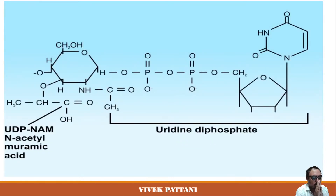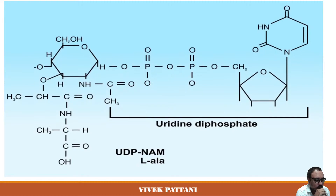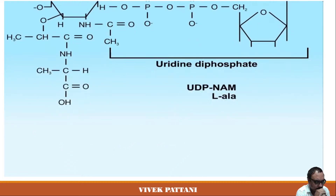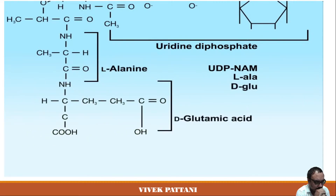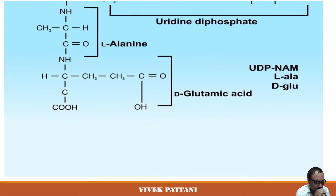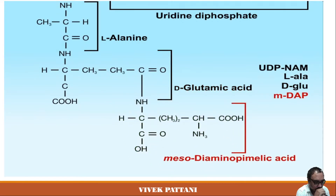The precursor subunit of peptidoglycan, UDP-N-acetylmuramic acid, is synthesized in the cytoplasm. A lactyl group is added to carbon number three of UDP-N-acetylglucosamine to form UDP-N-acetylmuramic acid. Five amino acids are added sequentially to UDP-NAM to form a pentapeptide side chain, using special adding enzymes so that tRNA and ribosomes are not involved.